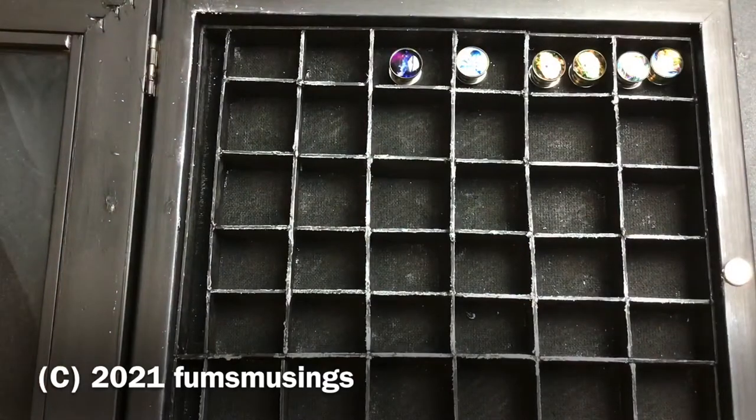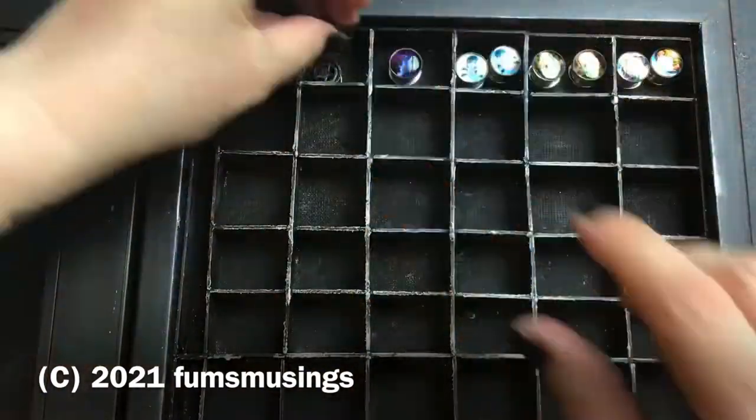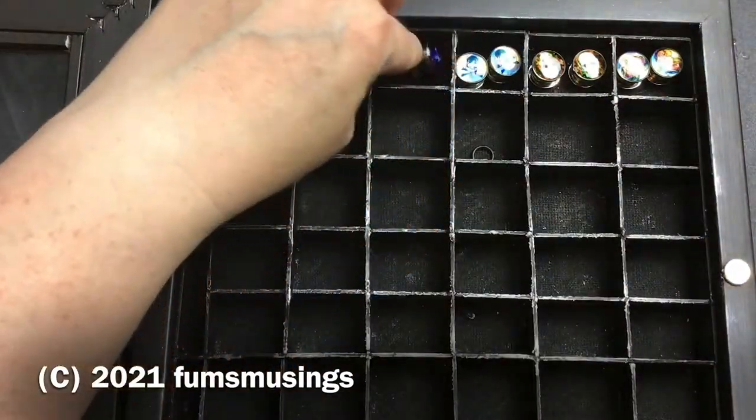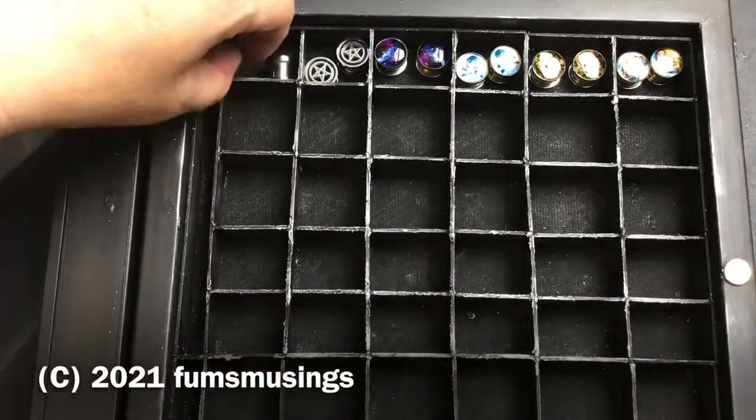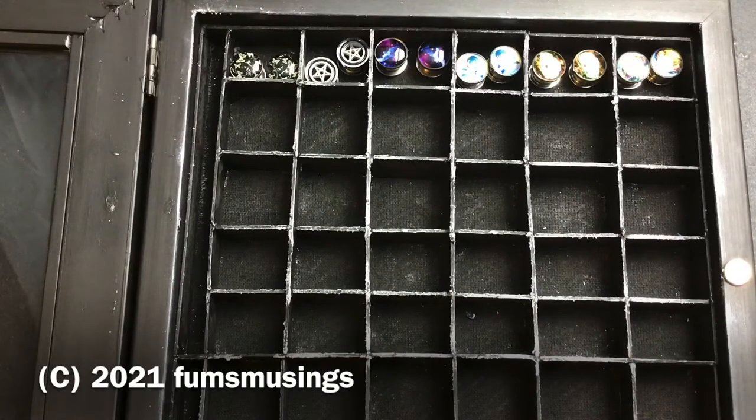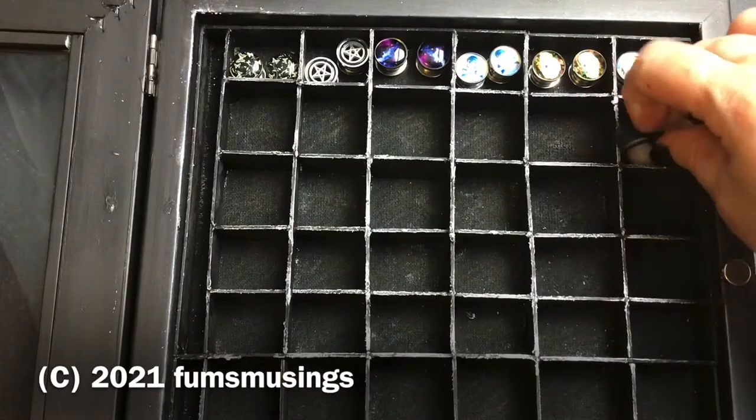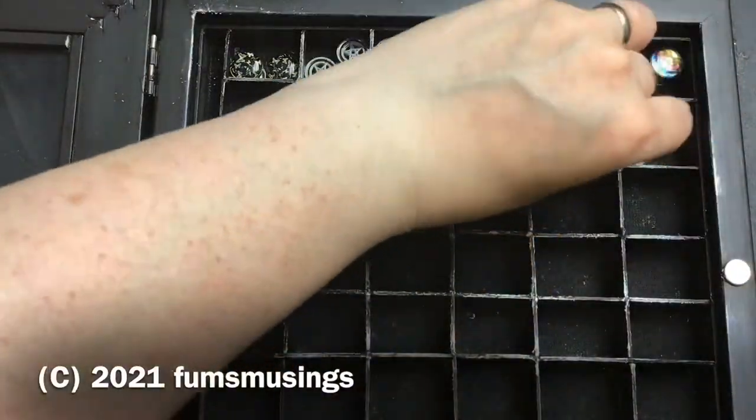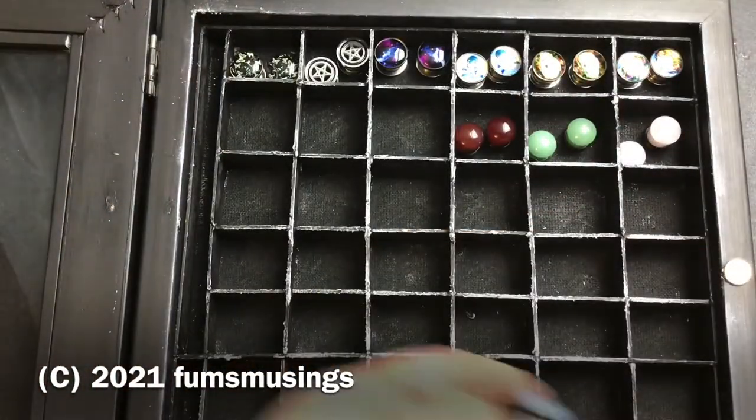I also did the same with the dividers inside the box, again just to make it look a bit more interesting than just being all plain black. Once I did that, it was a case of letting it all dry off and then sorting out all my plugs and tunnels and putting them in there.